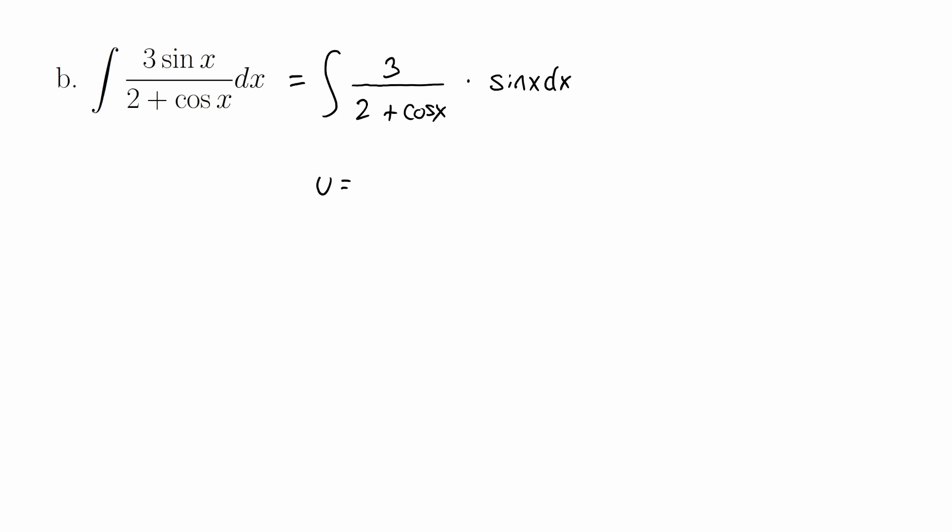It'll make it a little bit easier to see the conversion here. We're going to choose u as the entire denominator, 2 plus cosine of x. We're going to calculate the differential. The derivative of 2 is 0, 2 is a constant, and the derivative of cosine is negative sine. Now if you look at the factor in your integral, you have sine of x dx, but we have du as negative sine of x dx. That's not a problem—you can bring that negative to the other side and write that as negative du equals sine of x dx.